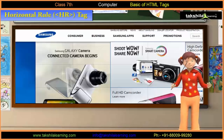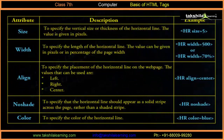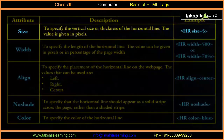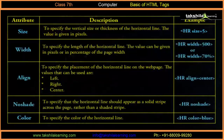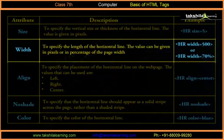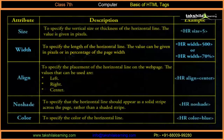The attributes of the HR tag are listed as shown. The Size attribute specifies the vertical size or thickness of the horizontal line; the value is given in pixels — for example, HR size is equal to 6. The Width attribute specifies the length of the horizontal line; the value can be given in pixels or as a percentage of the page width — for example, HR width is equal to 600 or HR width is equal to 75%.